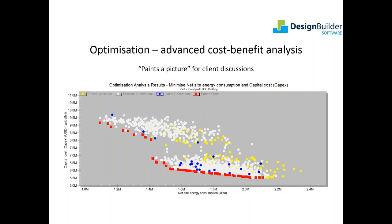We'll touch on most of these capabilities during the course of the webinar in the context of the project and as they were used by the team. Now on to the detail of the project to design the net zero healthcare building. An important point to note is that the work you're about to see was done by a volunteer team with busy day jobs in a little over two months. The work they and the other teams did in such a short timescale was quite remarkable, and I'd like to take this opportunity to thank all DB's team members for their hard work and positive attitudes.